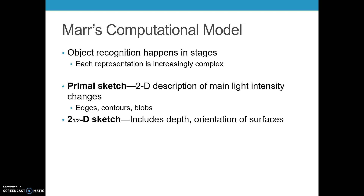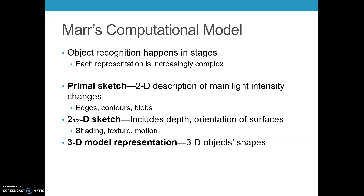From the primal sketch, we proceed into what Mar referred to as the two-and-a-half-D sketch. We've gotten the basic object edges and contours; at this point we start thinking more about depth and the orientation of surfaces, including things like shading, texture, and motion.